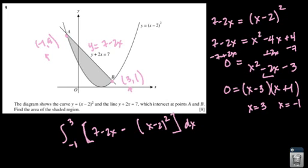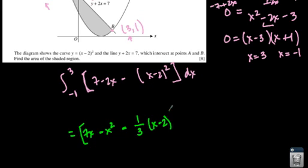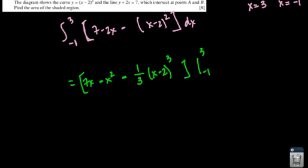And I'm just going to integrate. So we're going to end up with 7x. And then it becomes negative 2 divided by 2, which is negative x squared in this case, minus 1 over 3 times x minus 2 cubed from negative 1 to 3.